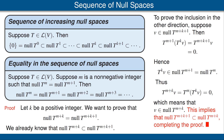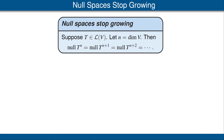The result we have just proved shows that if we ever hit an equality in the chain of inclusions about null spaces of powers, then we get equality forever after. This raises the natural question of whether we ever do hit an equality. The next result shows that is the case, and it depends upon V being finite dimensional. Suppose T is an operator on V and let N equal the dimension of V. Then the null space of T to the N equals the null space of T to the N plus 1, and equalities forever on.